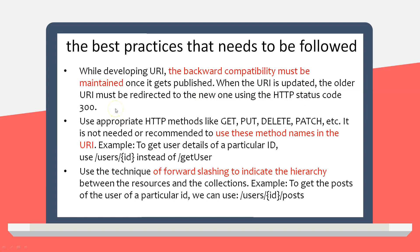If you have a new version of your API, make sure you still support the older version as well — backward compatibility must be maintained. Next good practice: use appropriate HTTP methods like GET, PUT, DELETE, PATCH. It is not recommended to use method names in the URI. For example, to fetch user details, use '/users/{id}' instead of '/getUsers'.